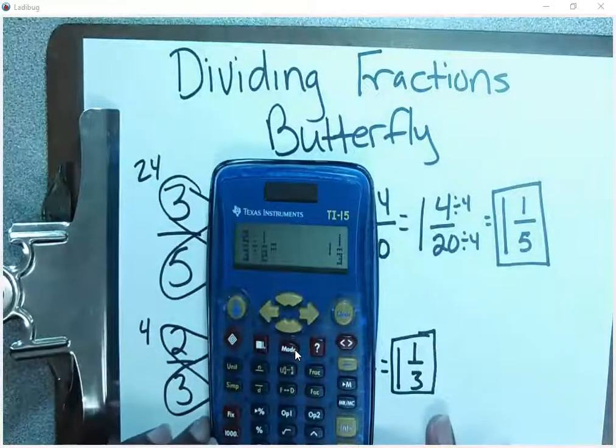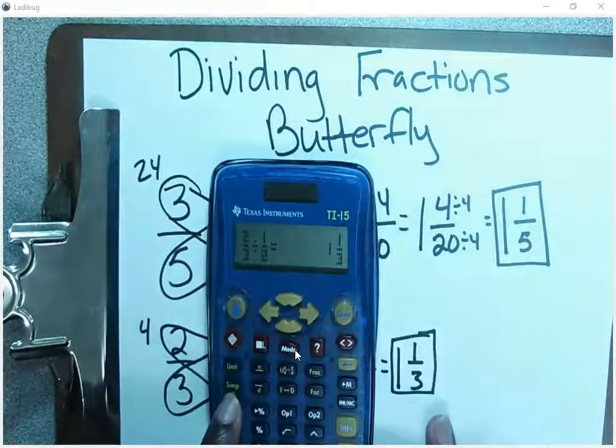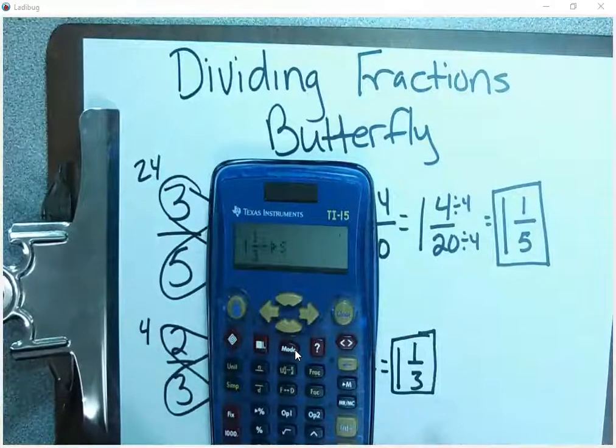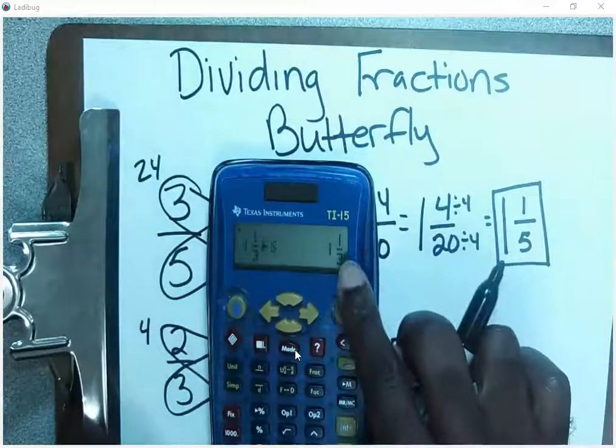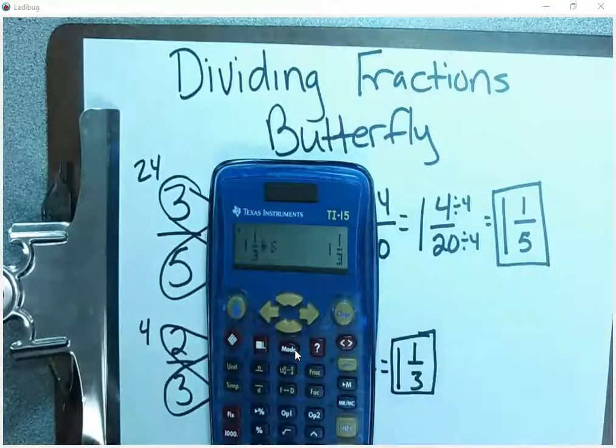To make sure we have it in the simplest form, we're going to hit simplify. We're going to hit enter and it gives us one and one-third still. It lets us know that it's the simplest form.